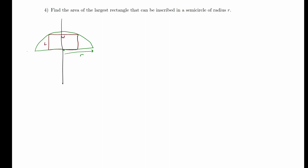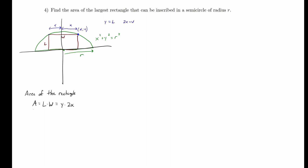By placing the figure in a coordinate system — recalling Descartes' key insight that coordinates connect geometry and algebra — we can write the equation of the semicircle as x squared plus y squared equals r squared. The rectangle and circle meet at a point (x, y): the y-value of that point equals the length l of the rectangle, and by symmetry of the circle, the width w equals 2x. So the area equals length times width, which is y times 2x.